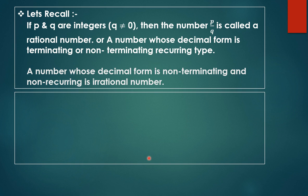Now the definition of an irrational number: a number whose decimal form is non-terminating and non-recurring is called an irrational number.